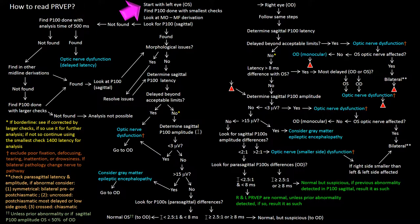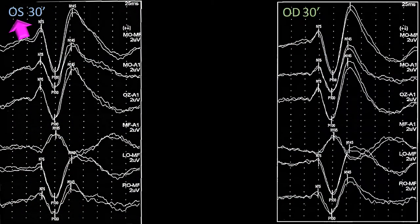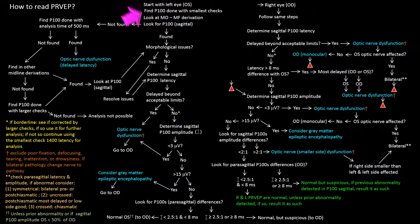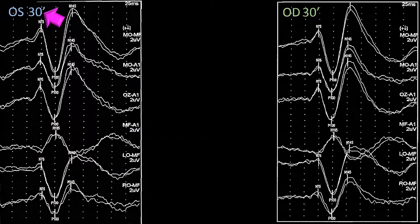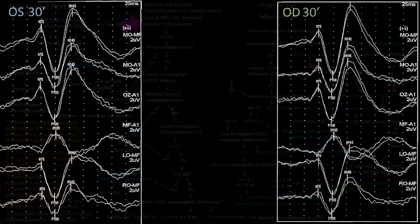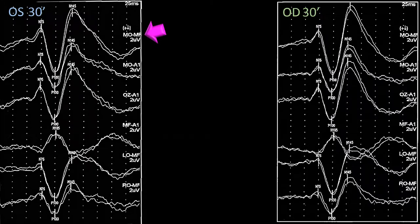The first step is to find the left eye, which is often labeled OS. The next step is to find the visual evoked potential done with the smallest check — usually not a problem since most of the time there is only one check used, which is the check recommended by the Academy. The size of this check is 30 minutes of arc. Next, we look at the MOMF derivation and find the first derivation, as indicated by the arrow.